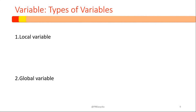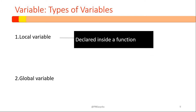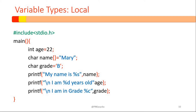We have two different types of variables to look at. We have local variables and we have global variables. A local variable is declared inside a function, while a global variable is declared outside a function. Let's use sample program code to learn the different types of variables.